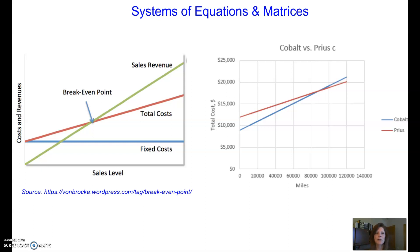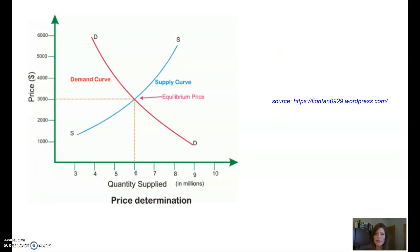Another example that you may have seen in one of your other classes is equilibrium point. So if you're comparing the demand curve to the supply curve where those two intersect, that's equilibrium. That's a good spot.